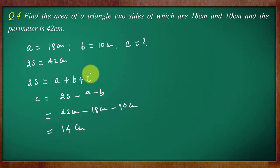Now you know a, b, c, all three. Calculate the semi perimeter from here. 2s is 42, so s will be 21 centimeter.